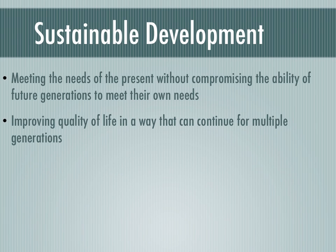What exactly is sustainable? Sustainable development meets the needs of the people right now, but it doesn't compromise the ability of future generations to meet their needs too. We're not using up all our resources right now without worrying about who's going to be living in the future. We also want to improve our quality of life — we want people living in extreme poverty to not have to live in those conditions, but we want to improve their lives in a way that can carry forward for multiple generations, not just a quick fix for one generation or one family.